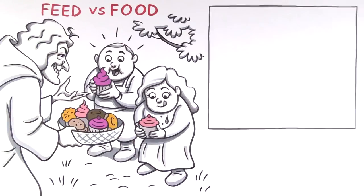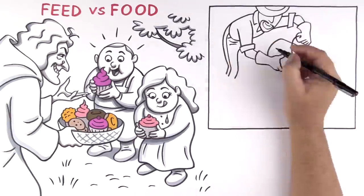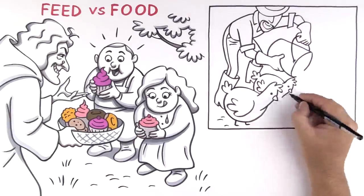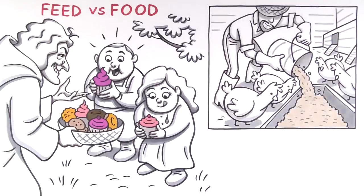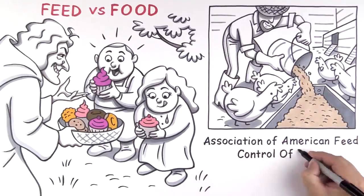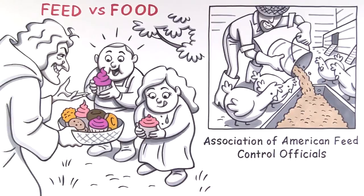Feed is manufactured to be high-fat and high-carb with the intent to plump livestock up for the slaughter. Livestock farmers provide feed that adheres to the standards of the Association of American Feed Control Officials, or AAFCO.